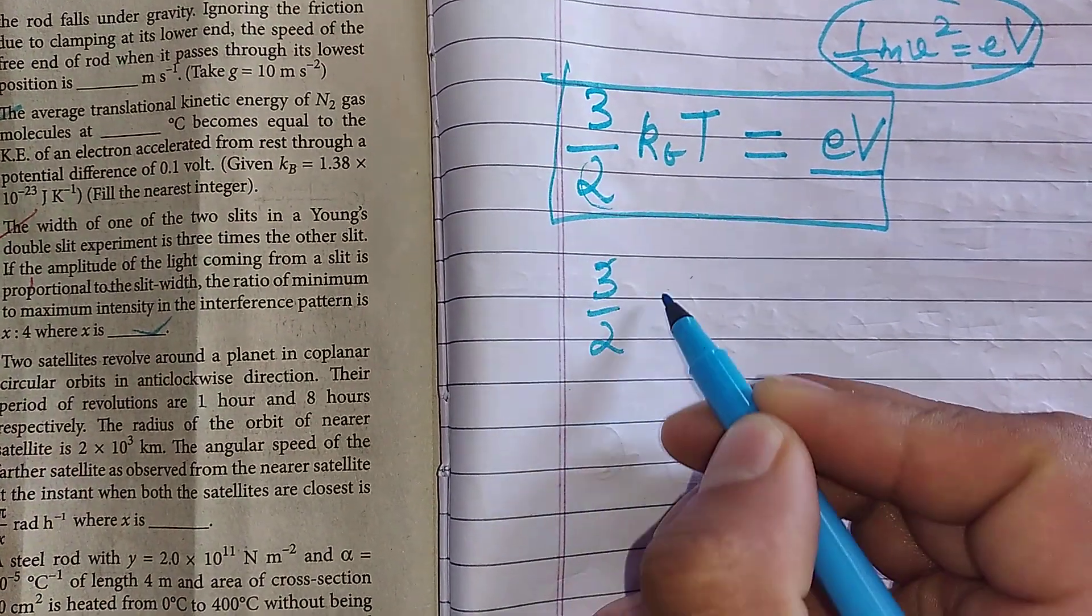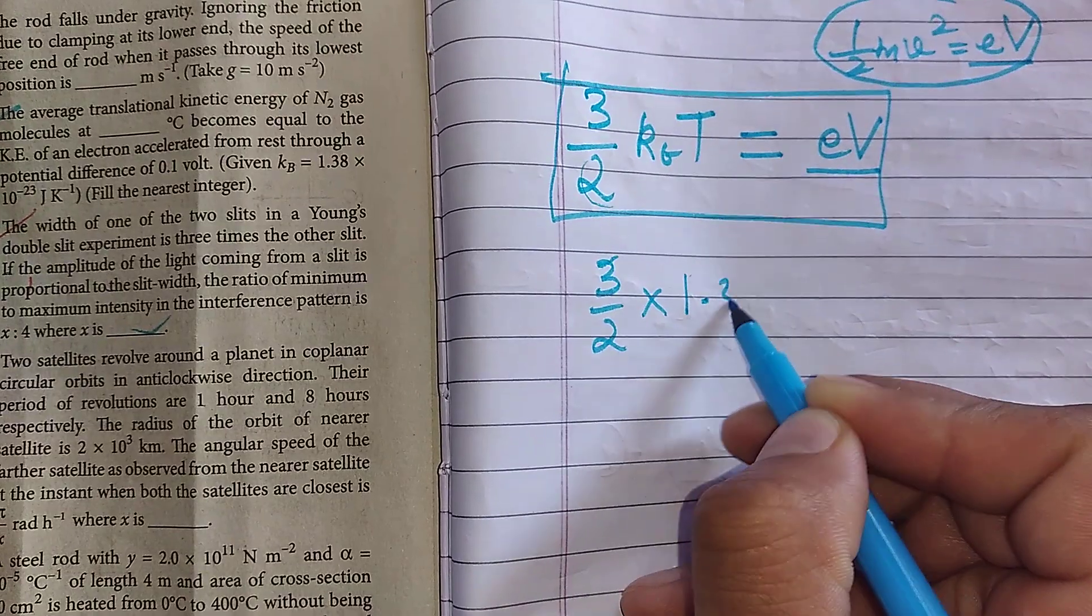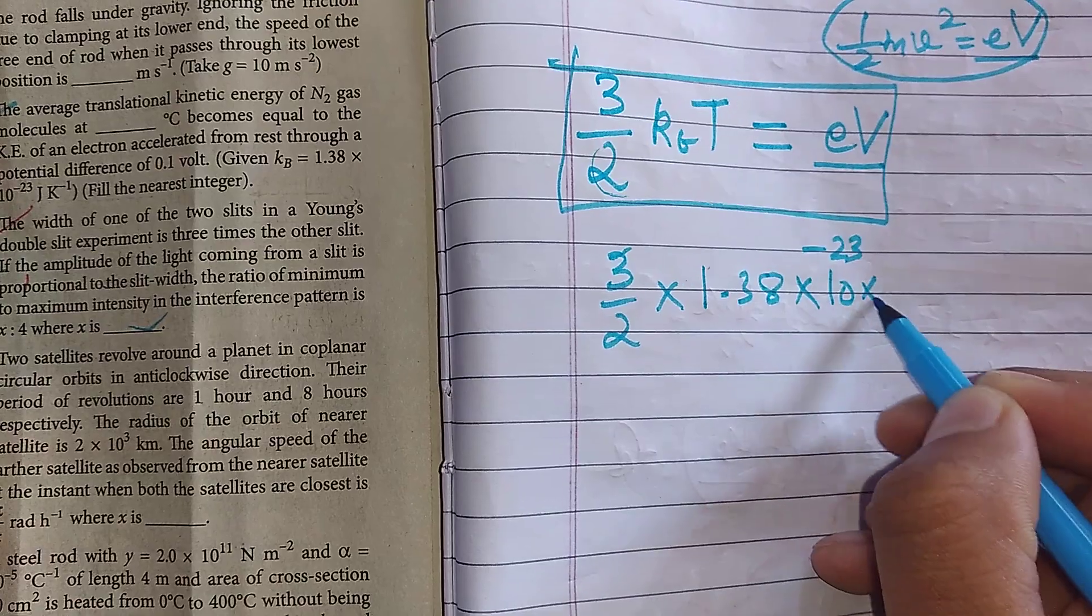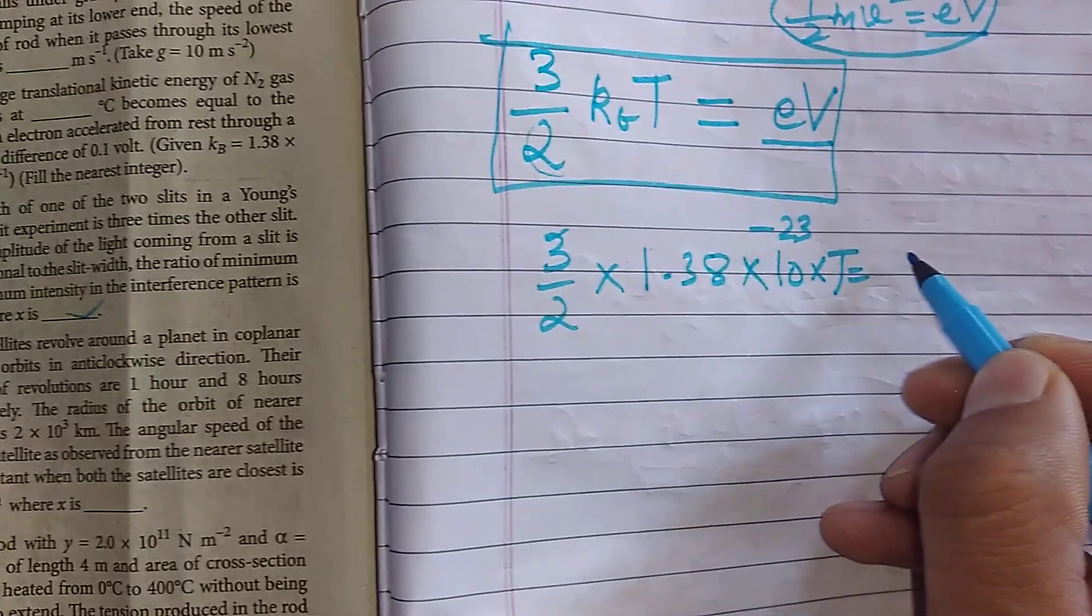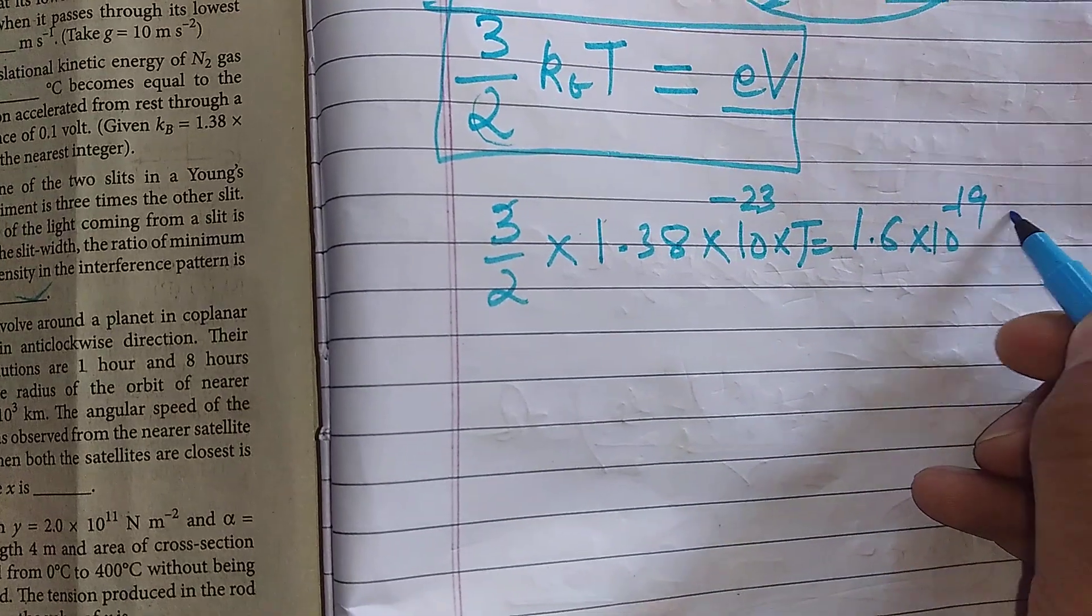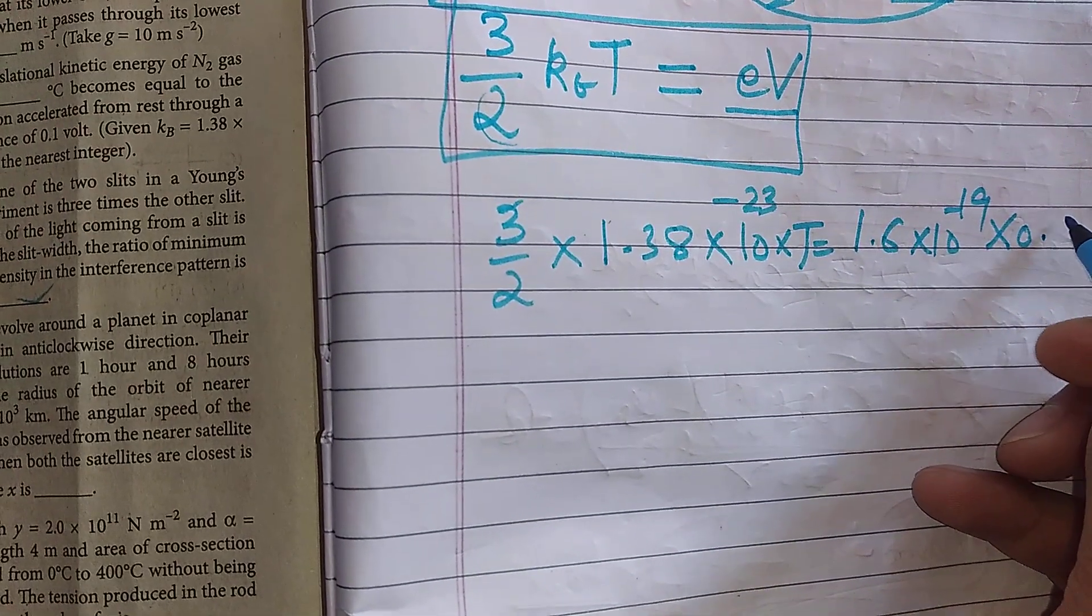So students, 3/2 kBT is equal to 1.38 × 10^-23 multiplied by T. And e is basically 1.6 × 10^-19 multiplied by potential. The difference is 0.1 volt.